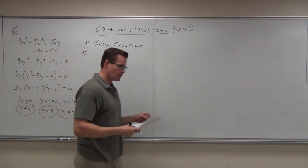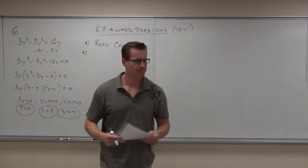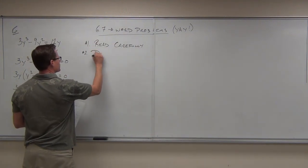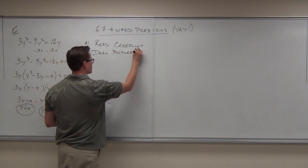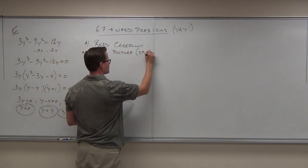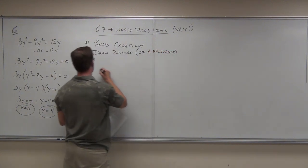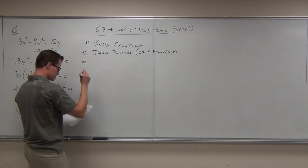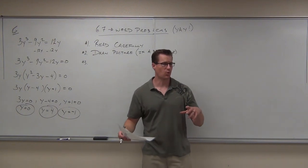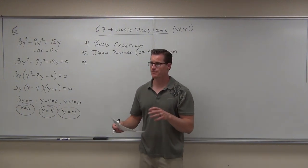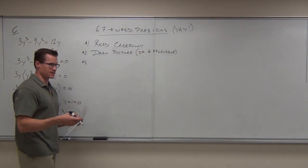Number two: if you can, draw a picture. If applicable, draw a picture of it. Number three — usually it's one or the other with these two; it's usually either you draw a picture or this next one, sometimes both. Number three is: if you can, find a formula.